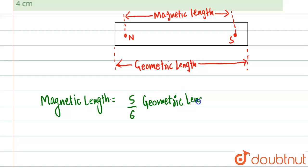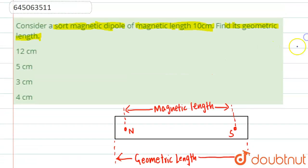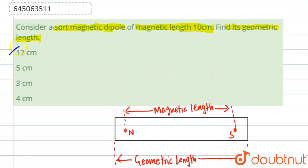So basically what we'll get from here is that geometric length, which I'll write as GL, must be equal to 6 by 5 into magnetic length, which is ML. So what is magnetic length given in the question? It is given as 10 centimeters. So we will write 6 by 5 into 10. So this will come out to be 12 centimeters. So basically the geometric length of the magnet is 12 centimeters. So our answer will be option number A. Got it?